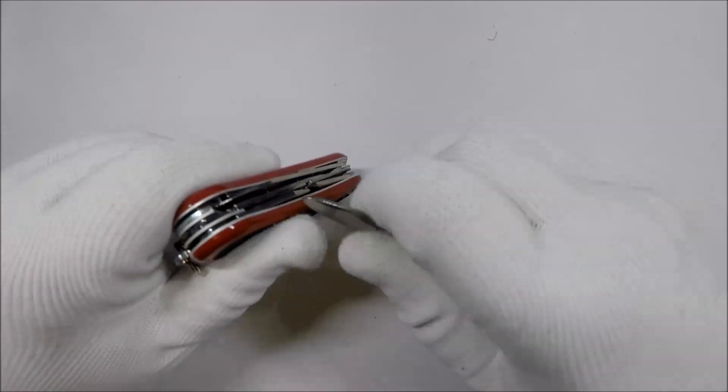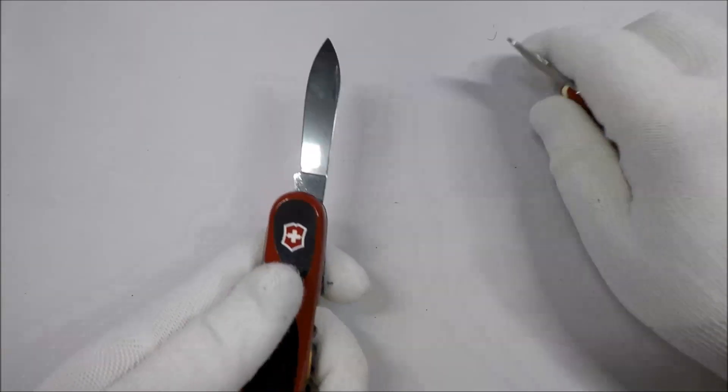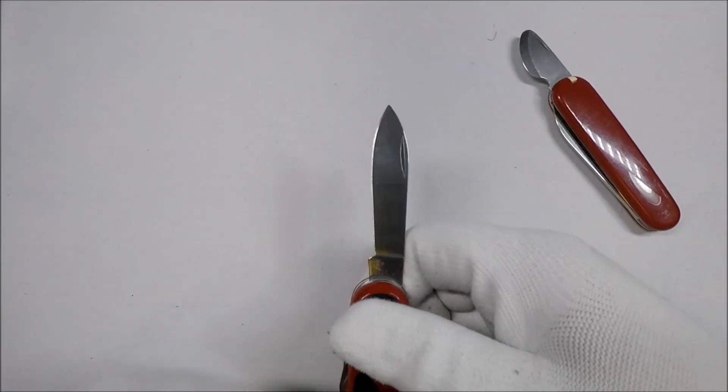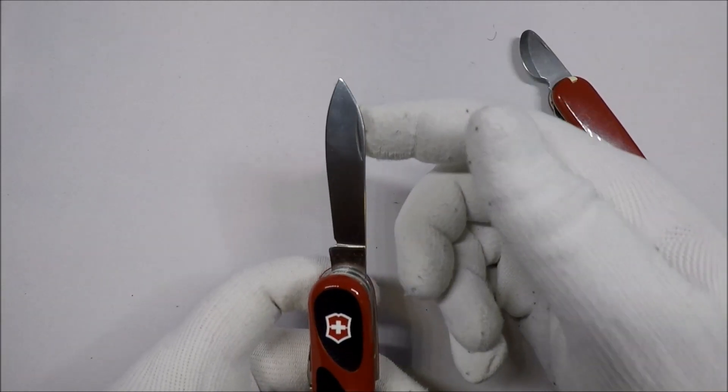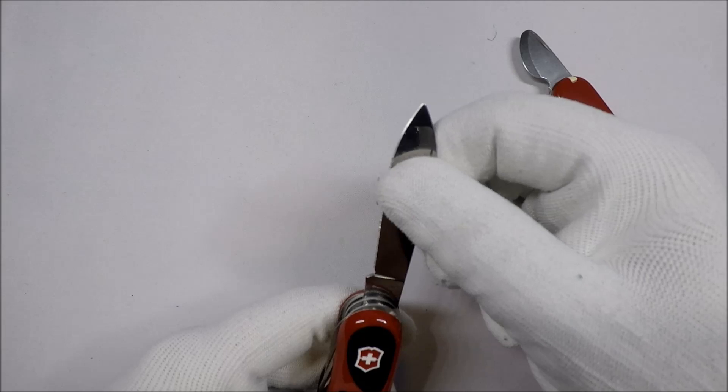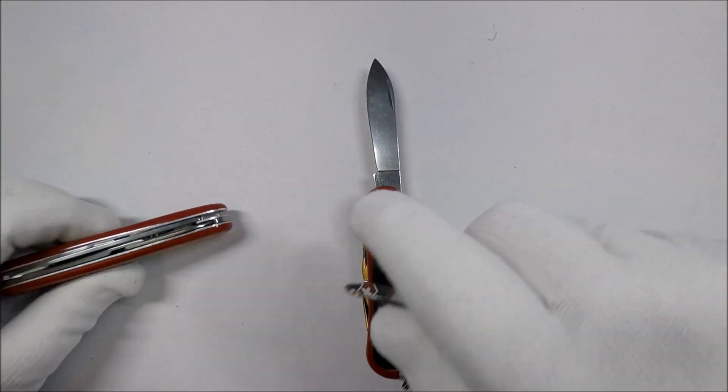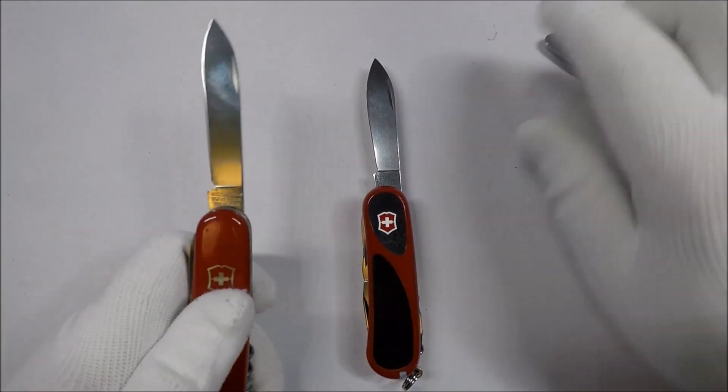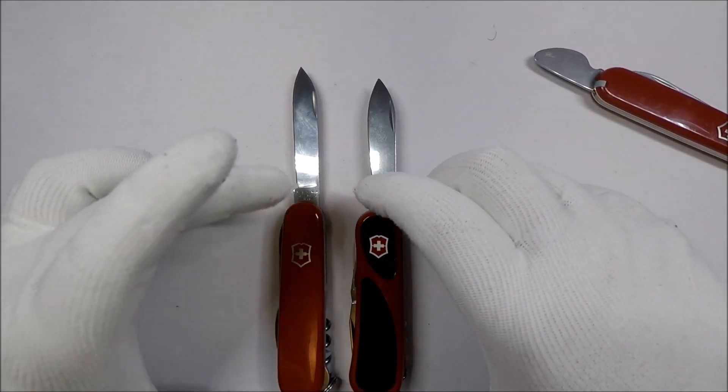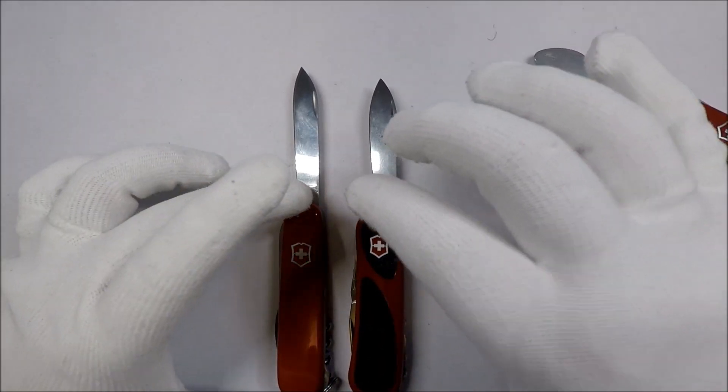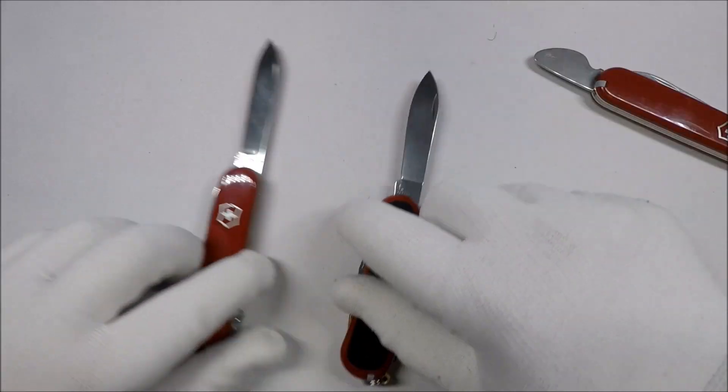You have the large Swiss Army knife blade. Now you have the Wenger version of it, which is a little bit wider than the traditional Victorinox one, for a quick comparison. You can see that Wenger blades tend to be a little bit wider and because you're dealing with 85 versus 91 millimeters, the blade's a teeny bit shorter.